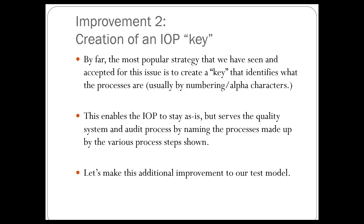The second step we're going to take is to apply a key that identifies what the processes are. This is a very popular strategy we've seen — a lot of organizations do this with numbering or alpha characters. We're going to use color coding to identify what the processes are. What this enables us to do is keep the IOP as rendered — we've not lost any of the work put into this — but we now have a way of knowing what the processes are.